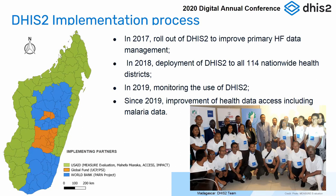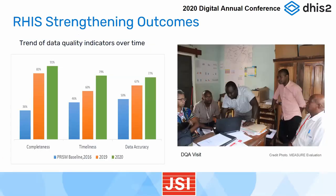As you can see in the map, the rollout of DHIS2 was made possible by the contribution of USAID-funded projects like Measure Evaluation, MyFabrica, Access, Impact, as well as Global Fund and World Bank. As a result of this shift to the web-based system, we can see a slight improvement in terms of data quality. Using the Access database in 2016, we had a completeness rate of 36%; with the use of DHIS2 it has gone up to 91%, as well as improvements in timeliness and data accuracy. The Ministry of Health conducts data quality visits regularly to monitor the use of DHIS2 and improve data quality.